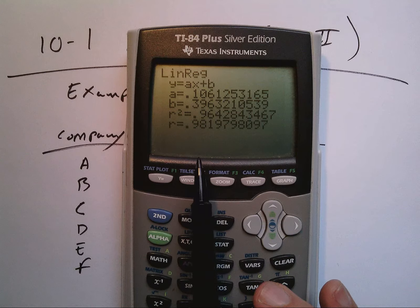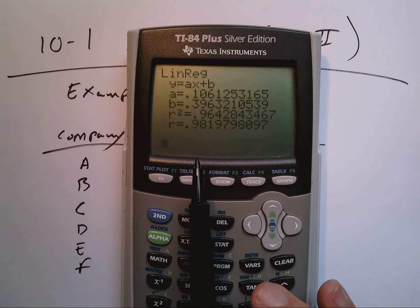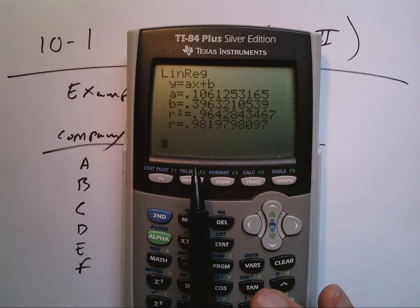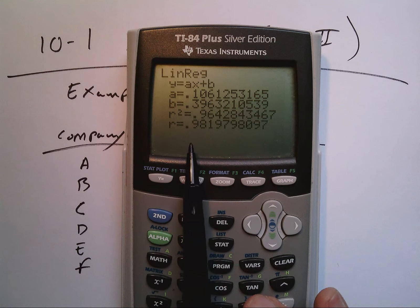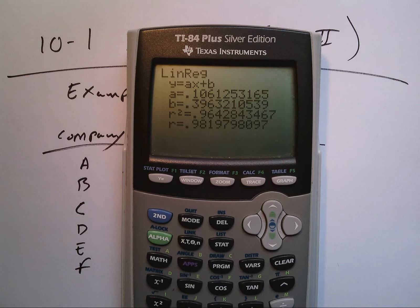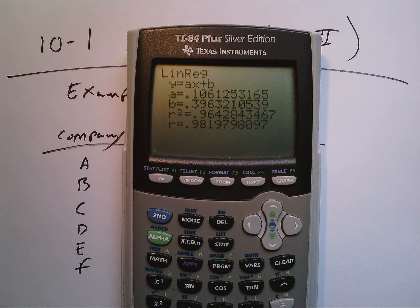Now r squared is literally that—it's the correlation coefficient squared—and there's other stuff we do with it later on.